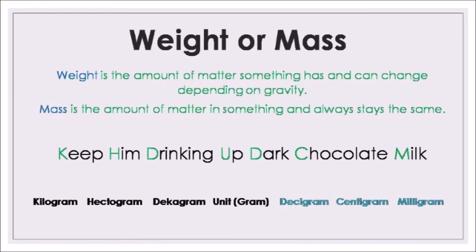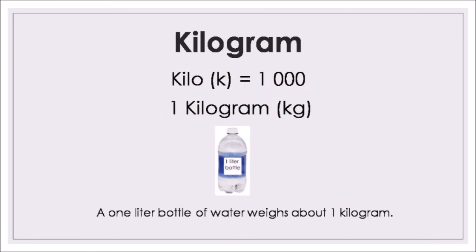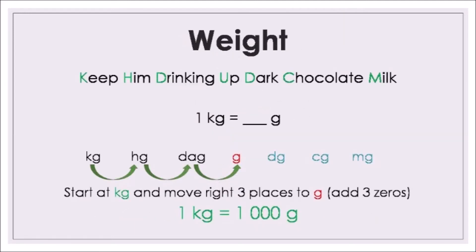Now we move to weight or mass. Weight is the amount of matter something has and can change depending on gravity. Mass is the amount of matter in something and always stays the same. For weight or mass we use grams: kilogram, hectogram, decagram, gram, decigram, centigram, milligram. Kilogram is the largest; milligram is the smallest. The gram is the standard unit. One kilogram is approximately equal to one litre bottle of drinking water. One kilogram is 1,000 grams — move three places to the right, multiply by 1,000.